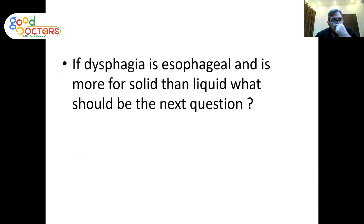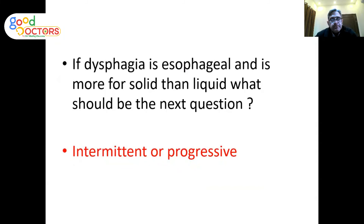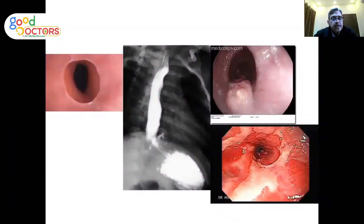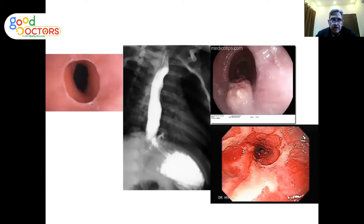For mechanical esophageal dysphagia more for solids, the next question is: is it intermittent or progressive? Schatzky's ring tends to cause intermittent dysphagia over many years. Malignancy and peptic strictures are progressive — initially the patient may manage semi-solids, but over time is left only able to take liquids. Progressive dysphagia should prompt consideration of peptic stricture and malignancy.